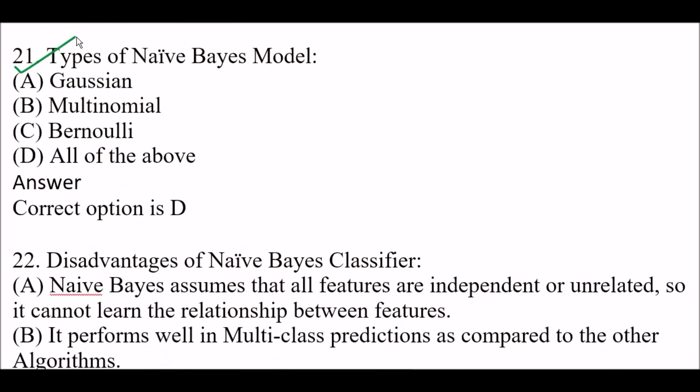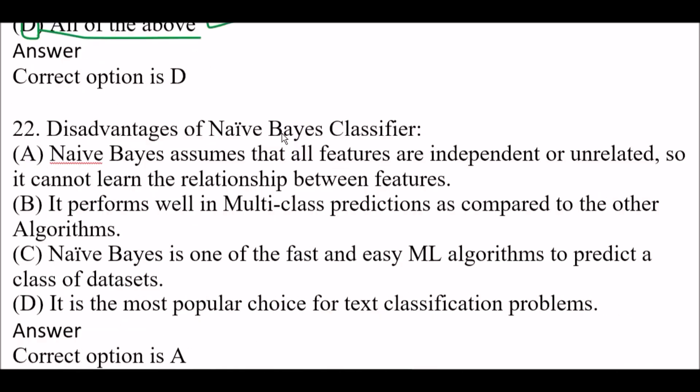Next question: Types of Naive Bayes model — Option A: Gaussian, Option B: Multinomial, Option C: Bernoulli, Option D: All of the above. Right answer is Option D — all of the above.